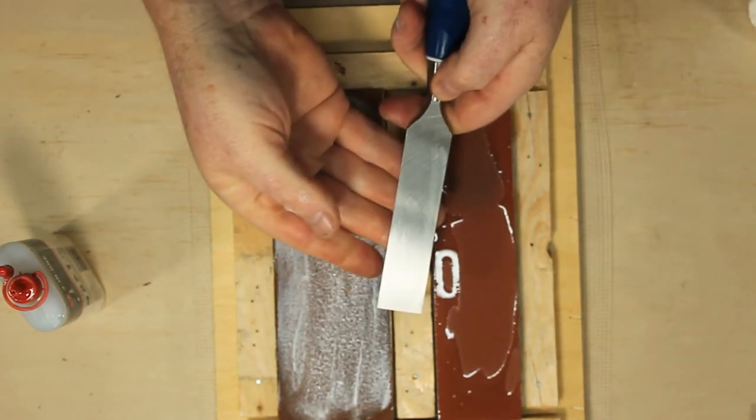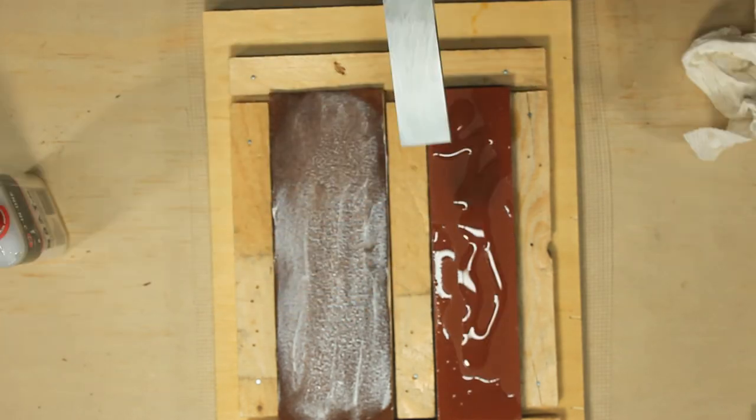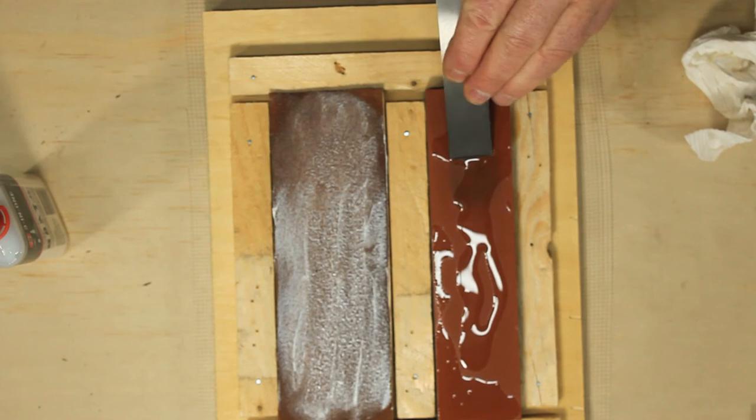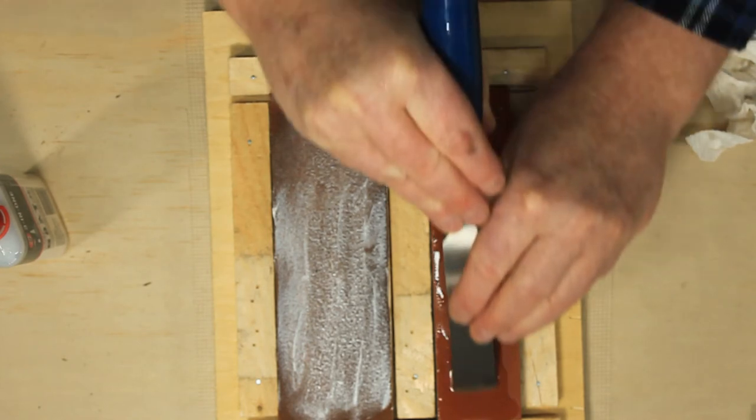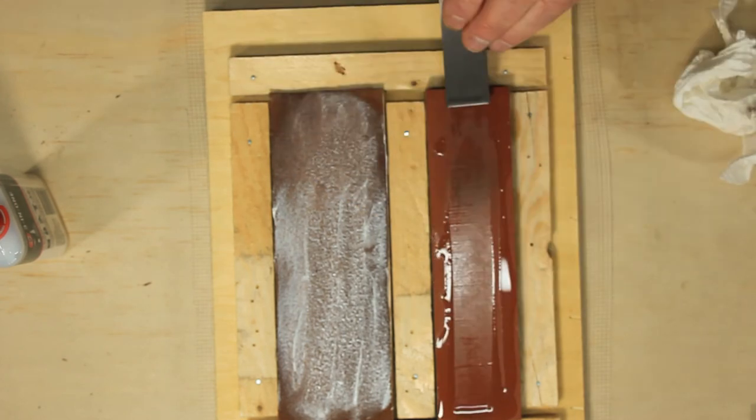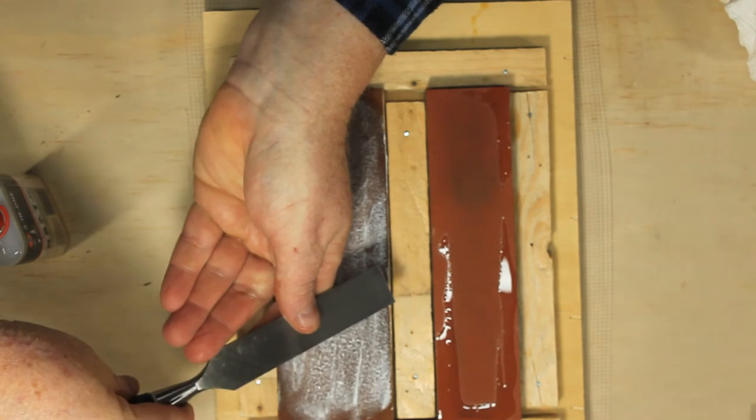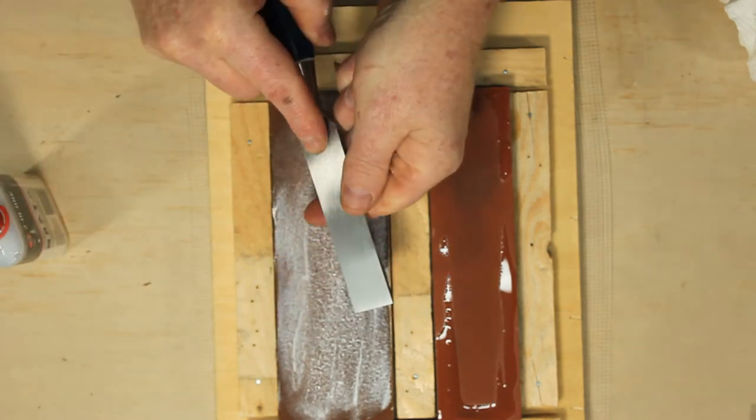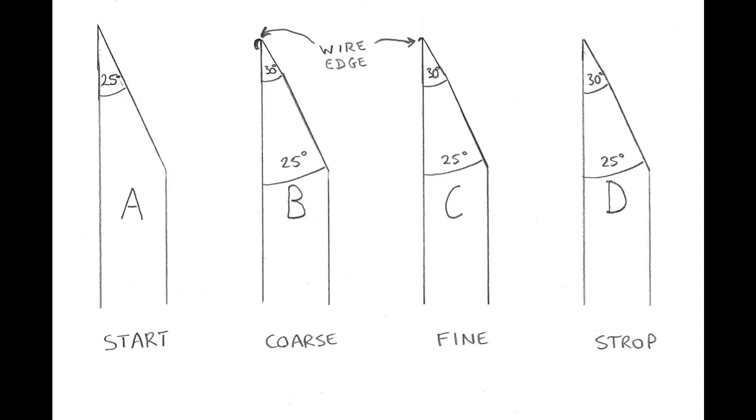As you can see, these chisels already have nice flat back sides. Hone the edge in the same way as before. This will leave you with a smaller wire edge on the chisel blade. This brings the chisel up to stage C with a small wire edge to be removed on the strop.